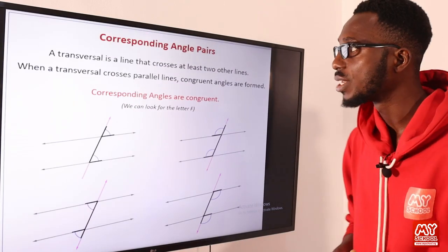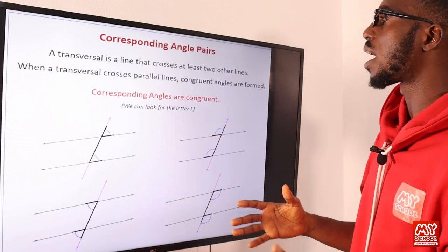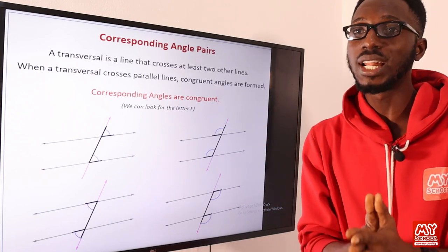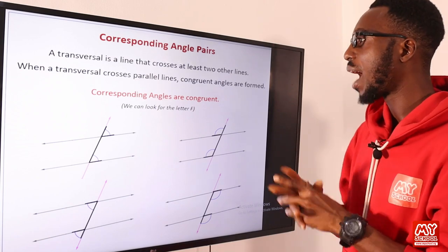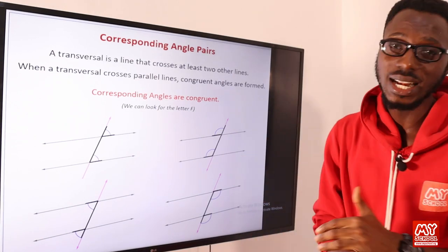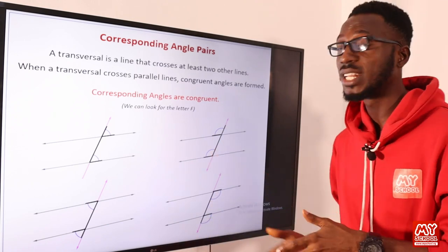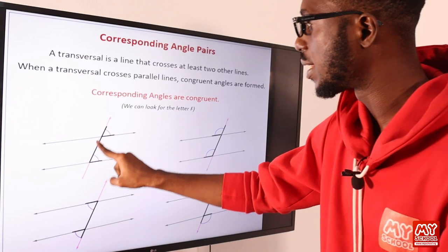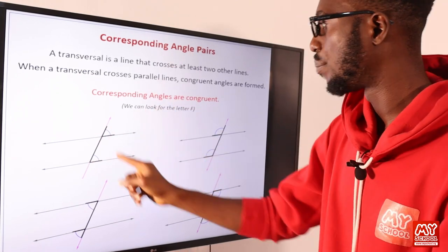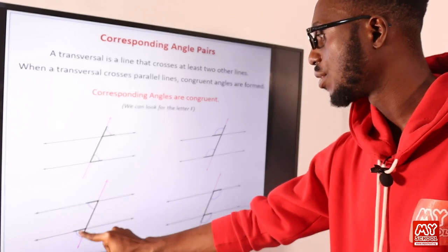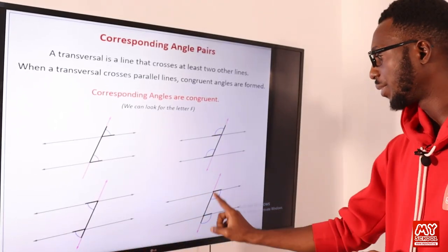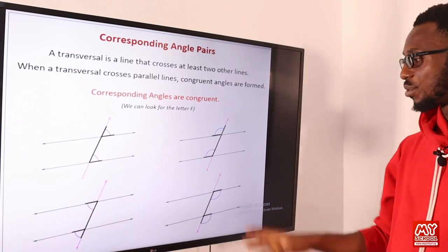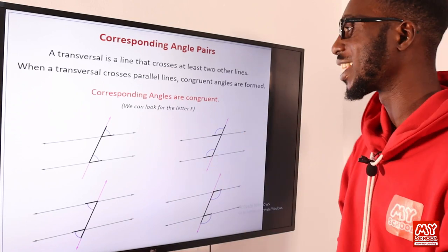The transversal is a line that crosses at least two other lines. When a transversal crosses parallel lines, congruent angles are formed — that means angles that are equal. Examples of congruent angles include your alternate angles and your corresponding angles. You can look for the letter F. Whether the F is upside down or facing the other side, you can still identify corresponding angles, and they are equal — that means they are congruent.